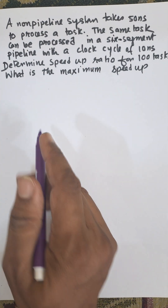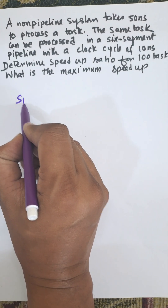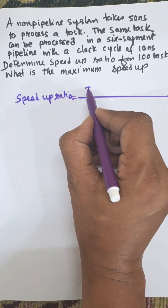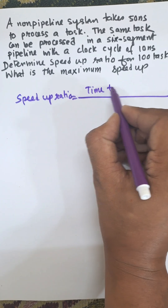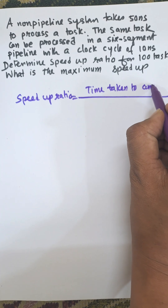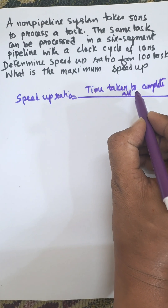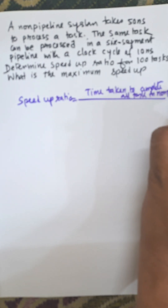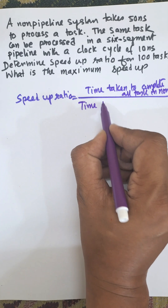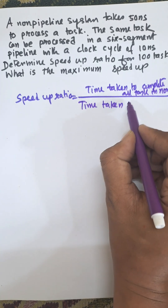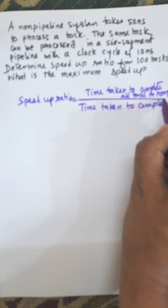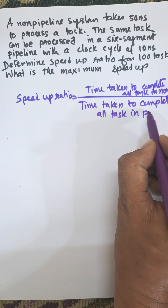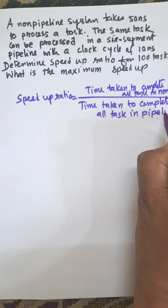We need to find the speed up ratio and maximum speed up. Speed up ratio equals the total time taken to complete all tasks in the non-pipeline system divided by the time taken to complete all tasks in the pipeline system. So this is: speed up = non-pipeline time divided by pipeline time.